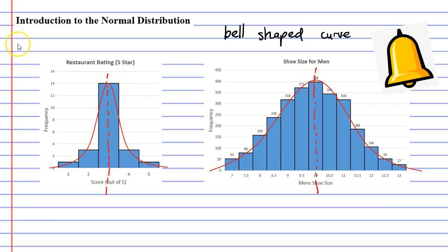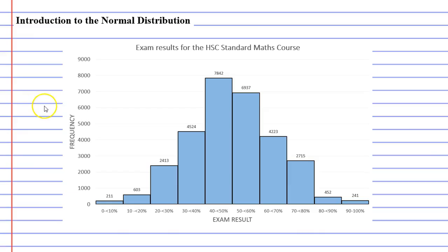A really good example of a normal distribution are exams. And I've made up a graph here which represents the exam results for the HSE standard maths course. Now, I need to point out that these results are made up. I would have loved to have found the actual results, but I couldn't. But if I had found the actual results from the last HSE exam, it would look something like this. It would have this bell shape.